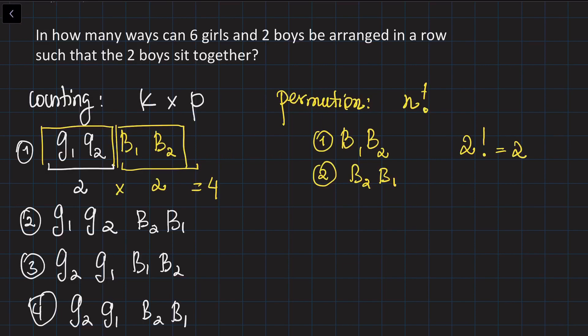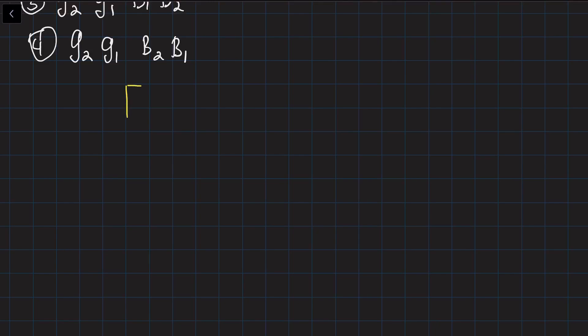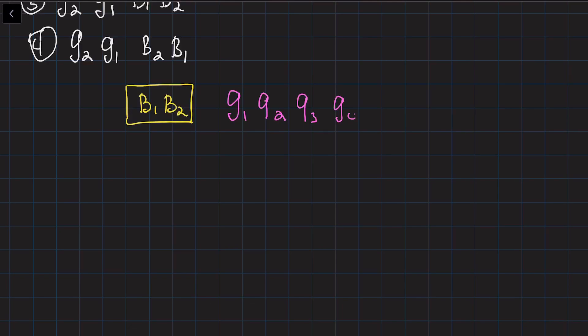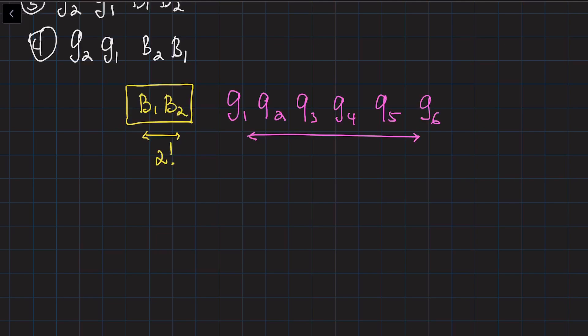These two important rules play a crucial role in combinatorial analysis. To solve our problem, we are first going to make a block of the two boys — boy one and boy two — since they are always together. Then we place the six girls: girl one, girl two, girl three, girl four, girl five, girl six. If we fix this arrangement with boys at the beginning, we apply the permutation rule: the two boys can be arranged in two factorial ways, and the six girls can be arranged in six factorial ways.